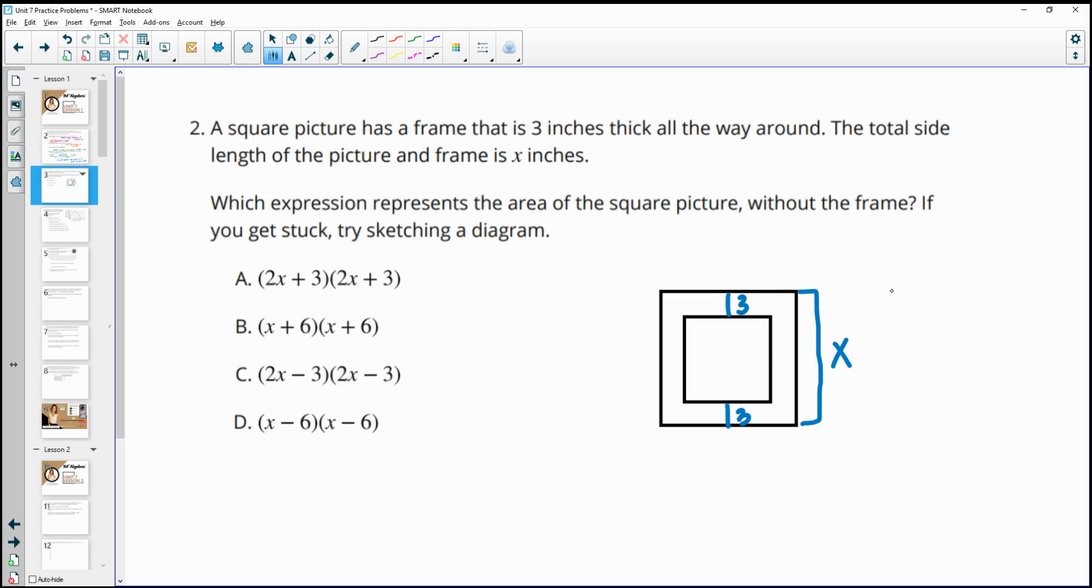we would have to take X, the full length, and we would have to subtract off both of these threes, right? So we'd have to subtract that from the length. So we could simplify it to X minus 6. This would be the length of the little square, and then also the width, since it's a square. So when we do area of a square or a rectangle, we're going to take length times width. So the length is X minus 6, and so is the width. So we would multiply those together. So D would be the expression that would represent the area.